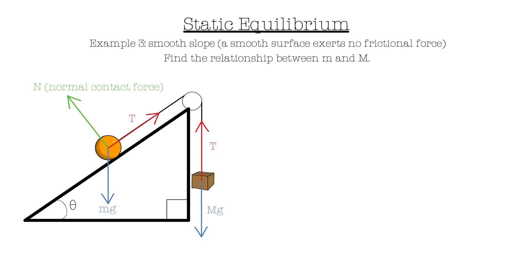Firstly, we need to resolve the weight of the ball into its horizontal and vertical components to the slope. When we resolve it, we get mg cos theta as the vertical component, and mg sin theta as the horizontal, represented in purple arrows.